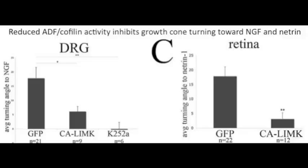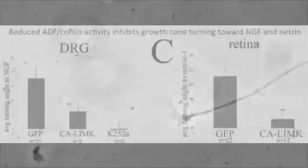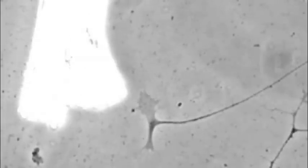Thus, turning towards guidance cues involves local protrusion of the growth cone margin via localized actin polymerization. This polymerization is triggered by activation of ADF cofilin, which increases actin barbed ends for actin monomer addition.